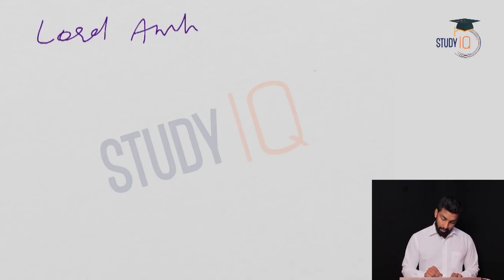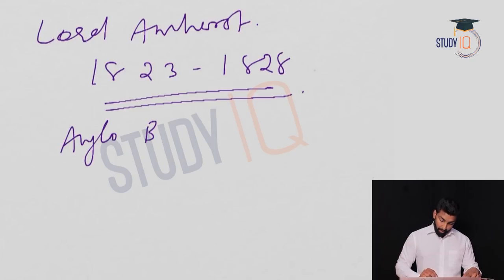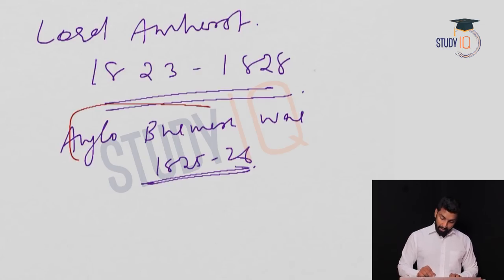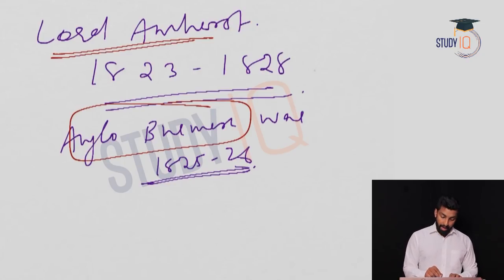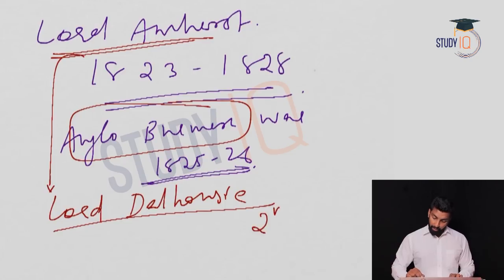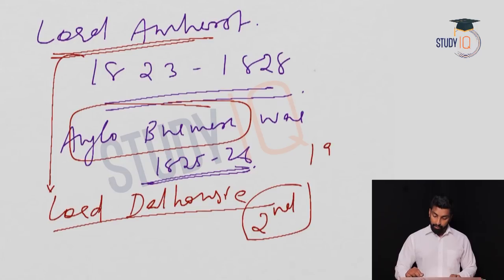Welcome to Study IQ. Next is Lord Amherst, whose tenure was 1823 to 1828. The only important event during his time is the Anglo-Burmese War of 1825-26. There were two Anglo-Burmese wars fought between the Burmese and English. The second Anglo-Burmese war occurred during Lord Dalhousie's time, and it's more important because they captured the lower part of Burma, continuing to rule it from British India till 1935.